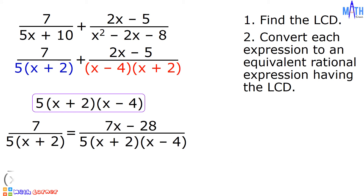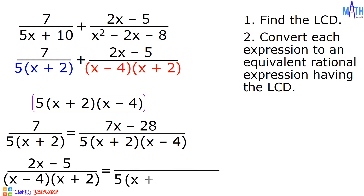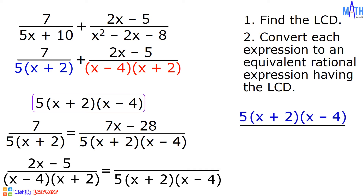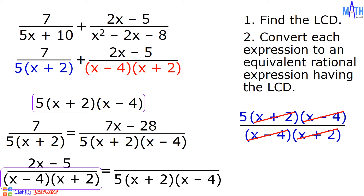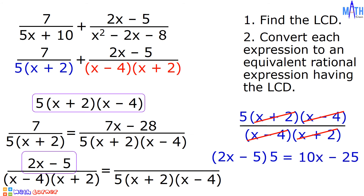Next, let us convert 2x minus 5 over quantity x minus 4 times quantity x plus 2 to an equivalent rational expression having the LCD. To convert this, let us divide the LCD by the denominator x minus 4 times x plus 2. Cancel out the common factors x plus 2 and x minus 4. We are left with 5. Next, let us multiply the numerator 2x minus 5 by 5. 2x minus 5 multiplied by 5 is equal to 10x minus 25. And this is the numerator.